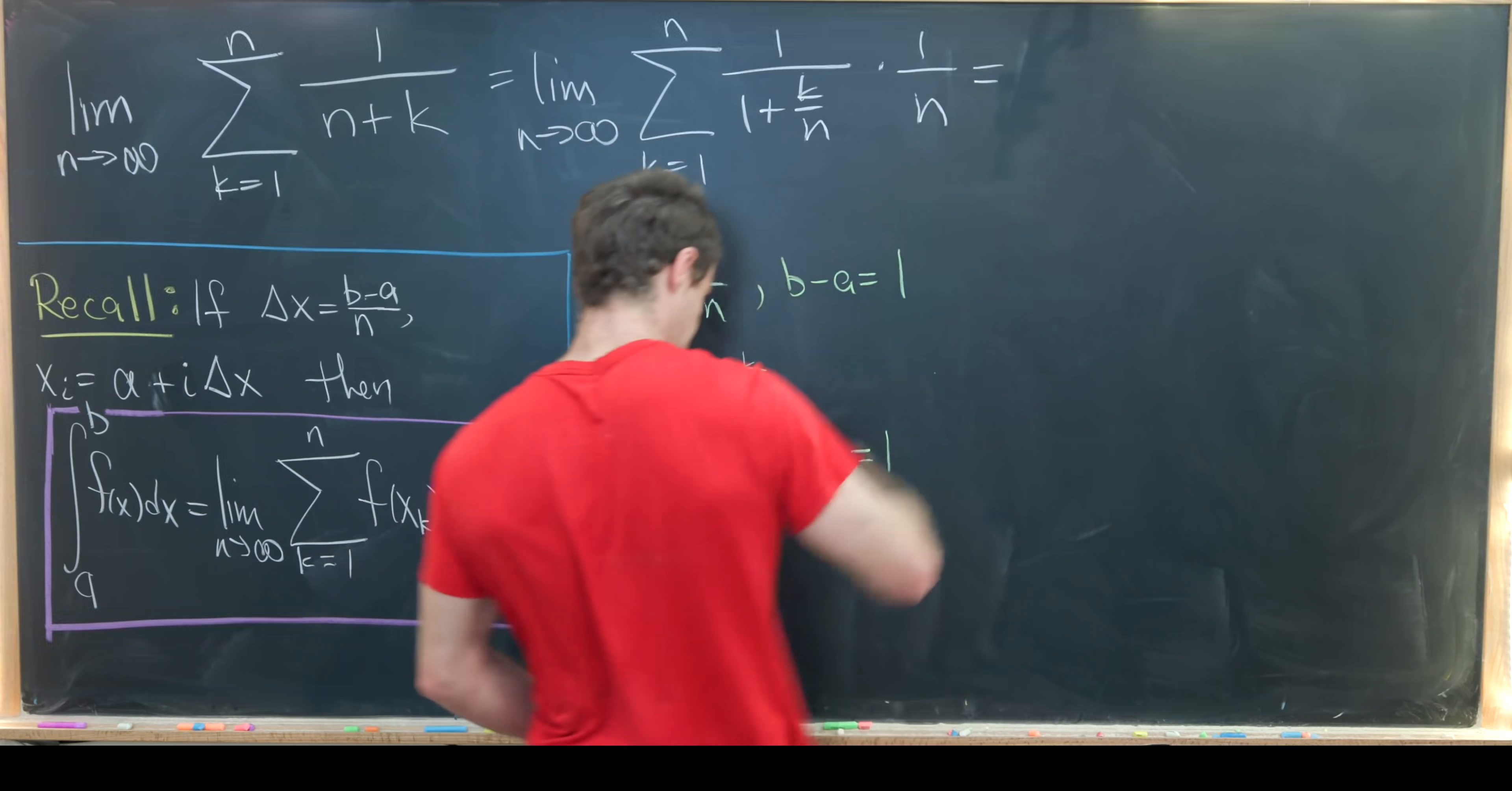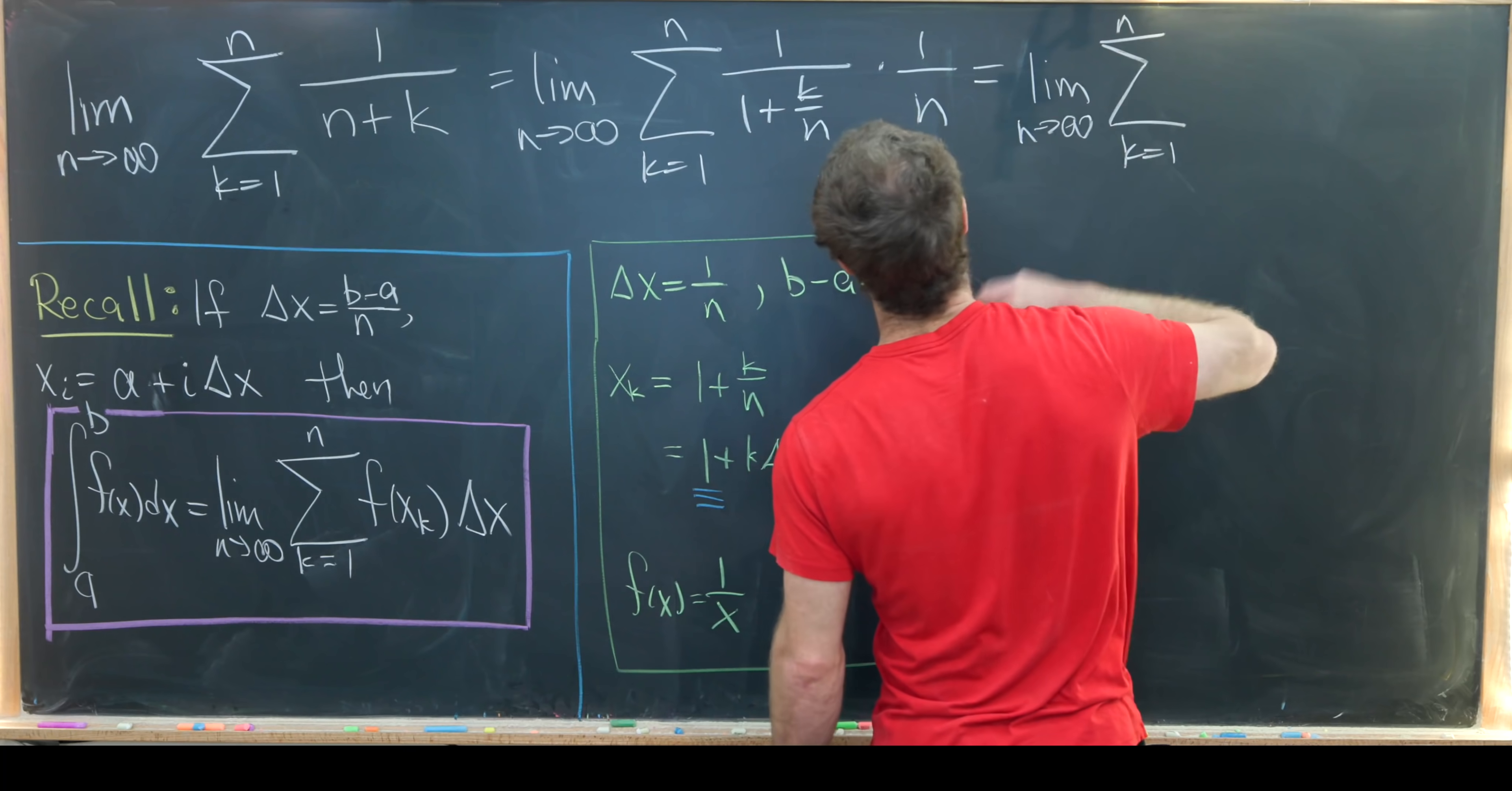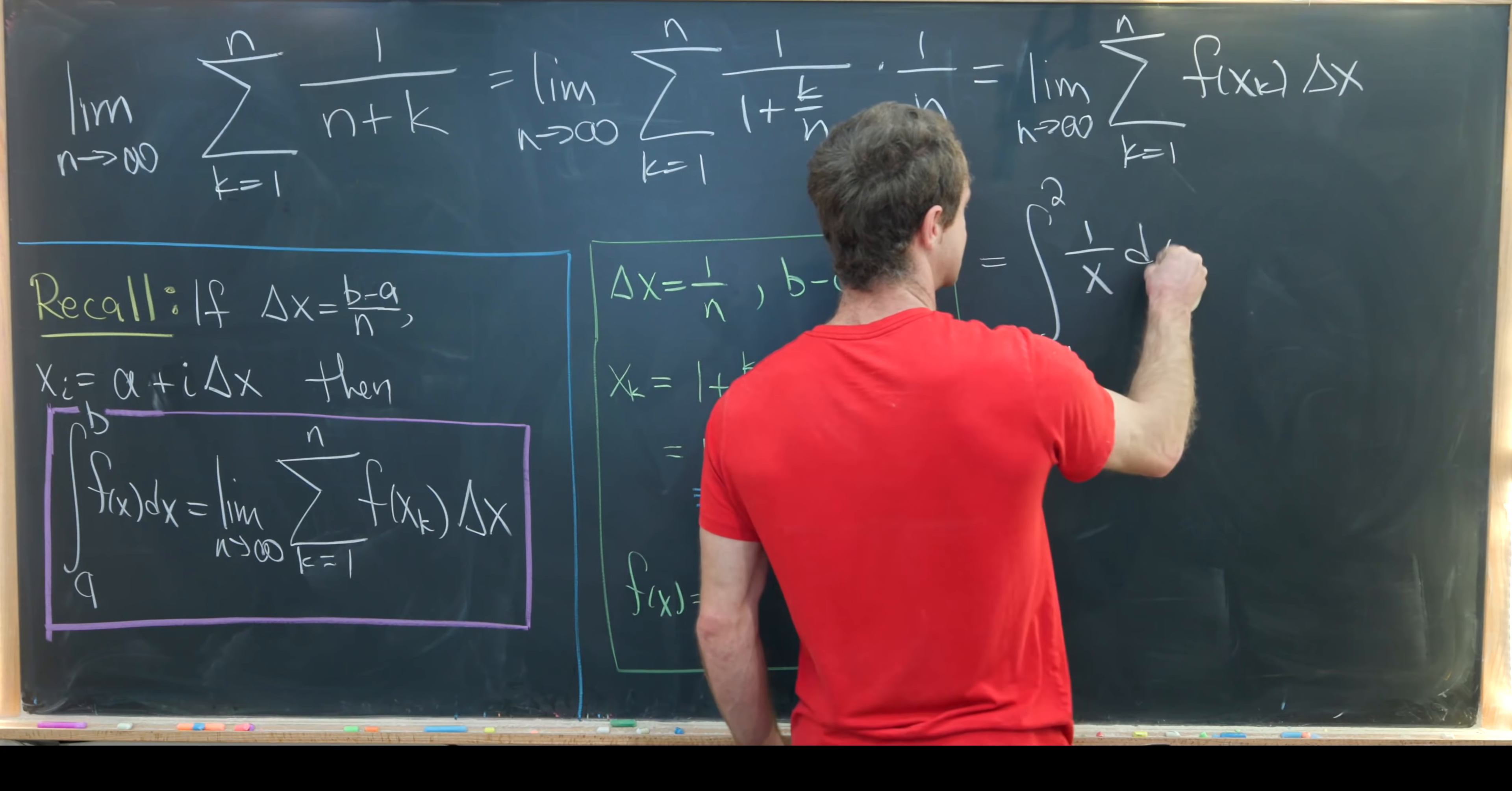Just to reiterate what happened, using this substitution which I have in green, we're able to rewrite this as the limit as n approaches infinity of the sum as k goes from 1 to n of f of x_k delta x, where all of those parts are described right here. Now we can transform this into an integral. That's the integral from 1 to 2 of 1 over x dx.